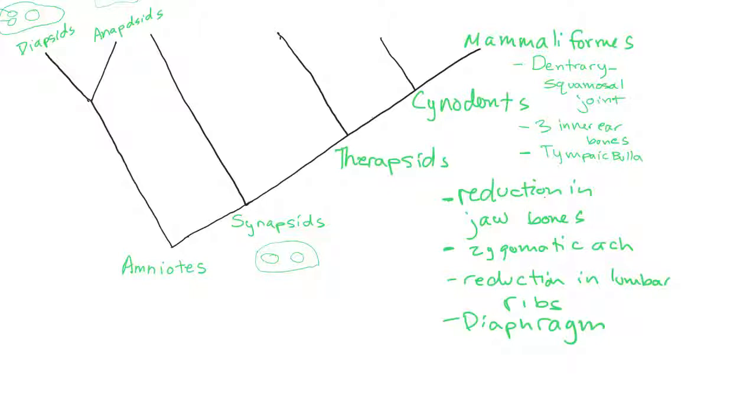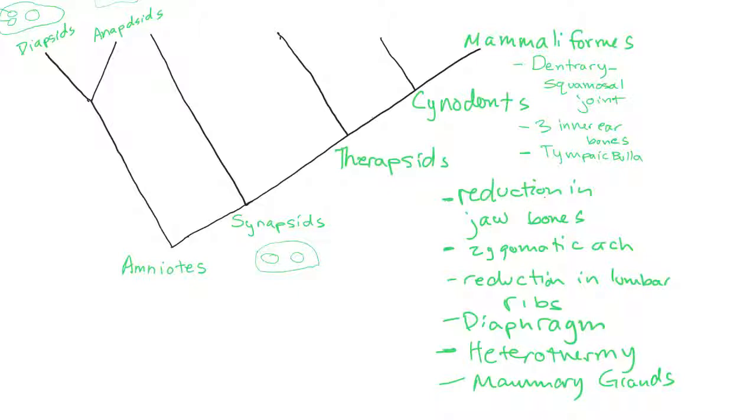All right, so some other ones we'll just throw on the therapsid and cynodont line. Heterothermy probably evolved within the therapsids and cynodonts. We just don't know when. Mammary glands, probably in there somewhere, but we don't know when. So there's some soft tissue characteristics. Any questions about that? So you should be able to go from amniotes to mammaliformes and know the different groups within there, just like we did there. We don't have to know the extinct ones that didn't end up becoming modern-day mammals.